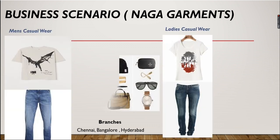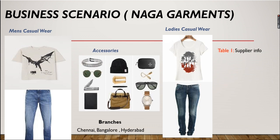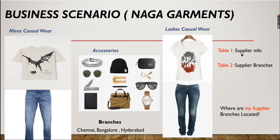Let's look at the Naga Governments Business example. There is a Supplier Info table. The question is: which branch are the suppliers located in? We have two tables — Table 1 with supplier information and Table 2 with supplier branch information — and we need to combine, merge, and join them.